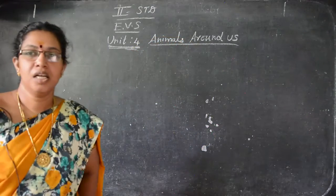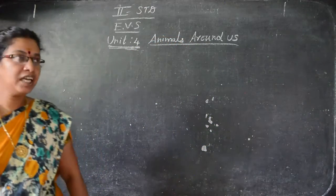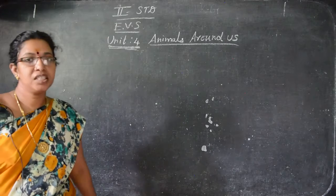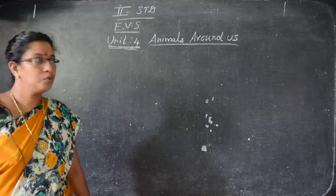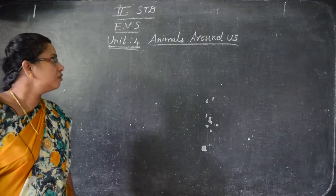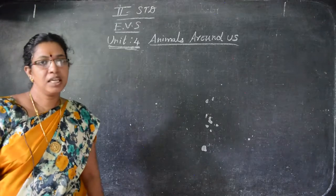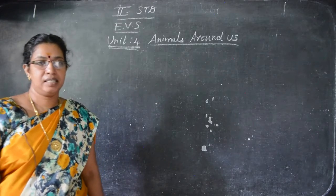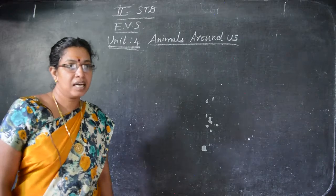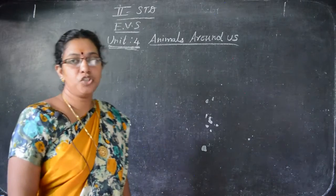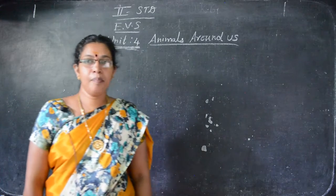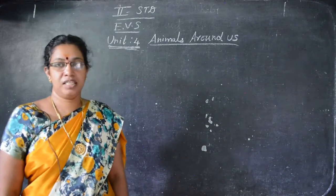Good morning, children. Now I am going to take EVA subject for standard 2. We are going to see animals around us. In the last class, in the last unit 3, we saw plants around us.